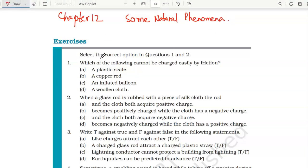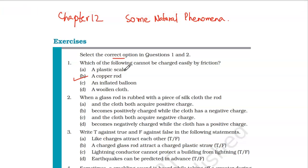The first question is about selecting the correct option. Question number one: which of the following cannot be charged easily by friction? A plastic scale, a copper rod, an inflated balloon, a woolen cloth. The correct option is a copper rod. Remember, anything which is a non-conductor is charged easily by friction. So metal objects are not charged easily by friction. They are charged by another method called conduction, which I have discussed in my lecture of this chapter.